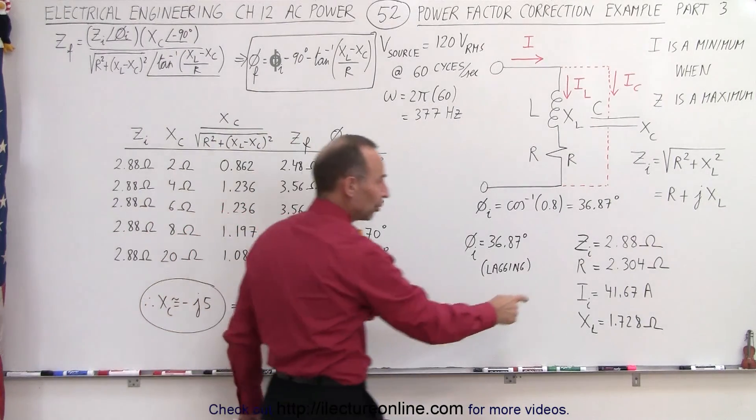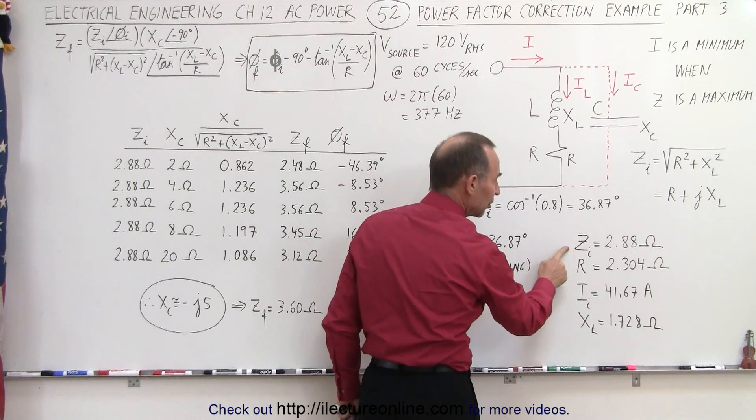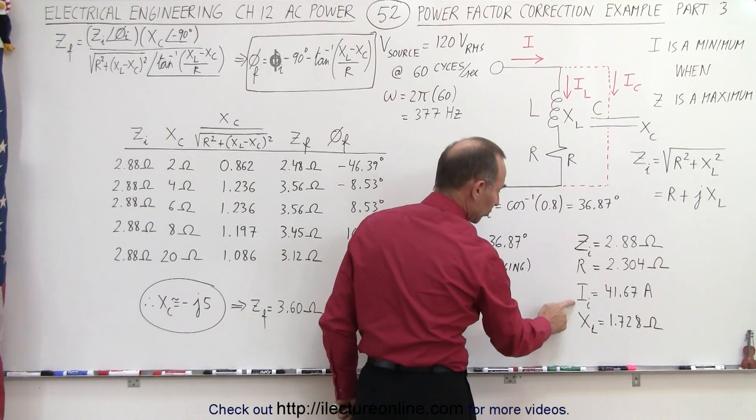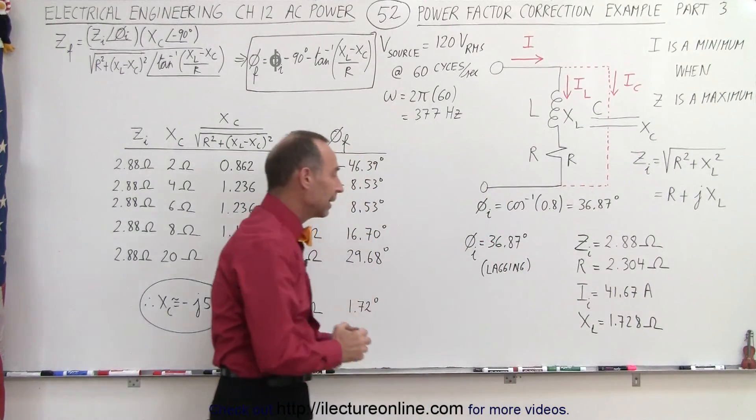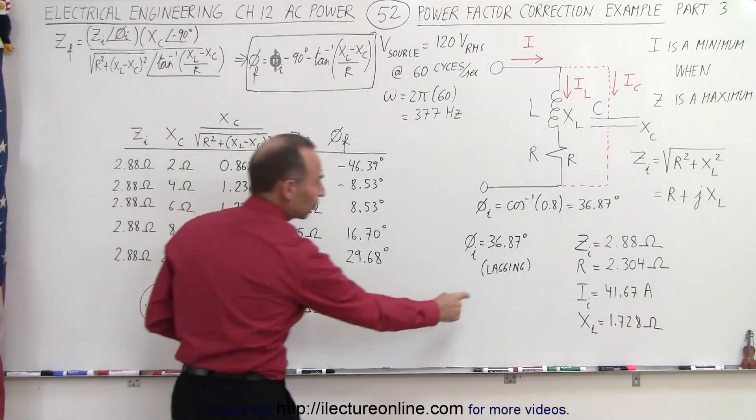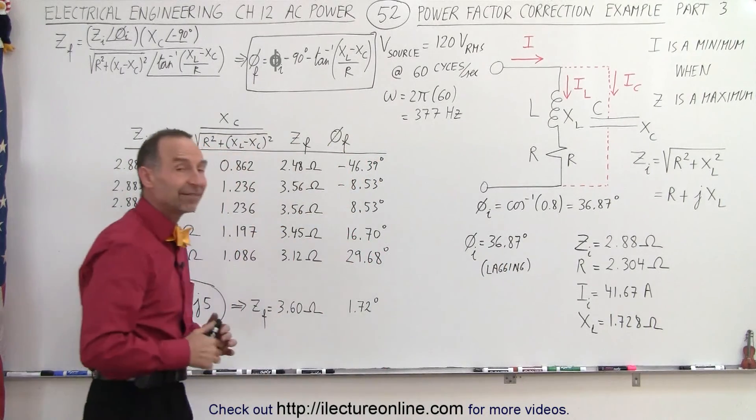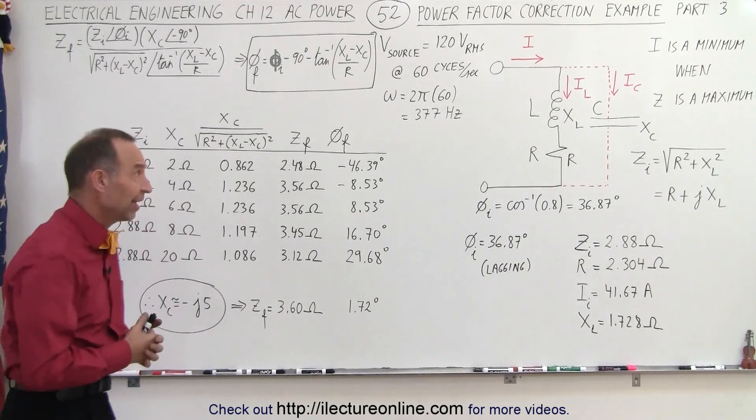Here we still have the old values from the first couple parts of the problem: the initial impedance, the resistance, the initial current, and the inductive reactants. Remember that we started out with a lagging phase angle of 36.87 degrees, that's essentially a negative phase angle.